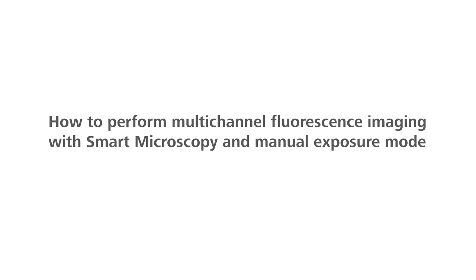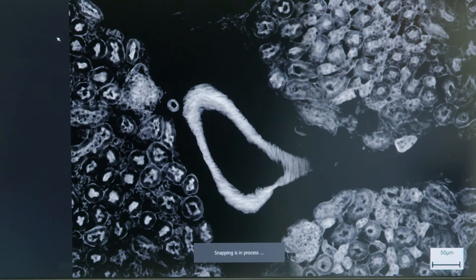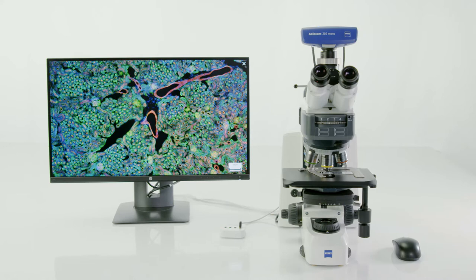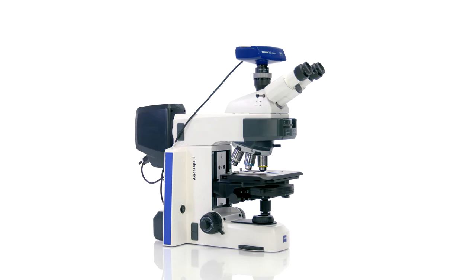How to perform multi-channel fluorescence imaging with smart microscopy and manual exposure mode. Imagine being able to acquire overlaid multi-channel fluorescent images complete with the right scaling using just your microscope, even without a PC. With smart microscopy and Axioscope 5 from Zeiss, you can do it all in one go. Here's how it works.